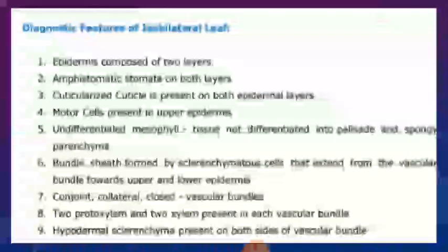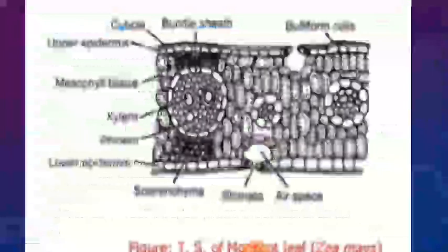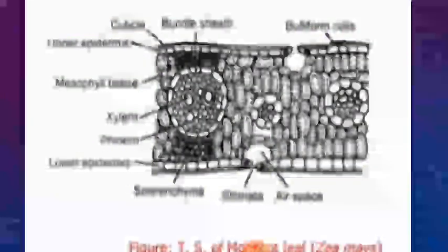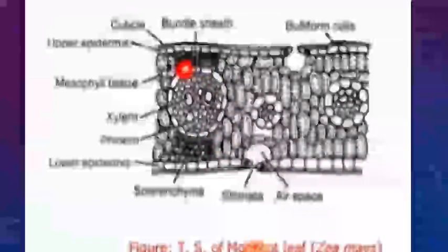Bundle sheath is formed by sclerenchyma cells that extend from the vascular bundles towards both the upper and lower epidermis. There is a presence of bundle sheath on both the upper side and the lower side of the leaf.